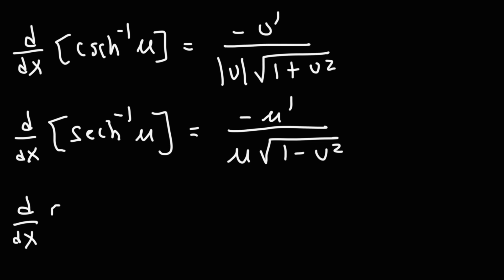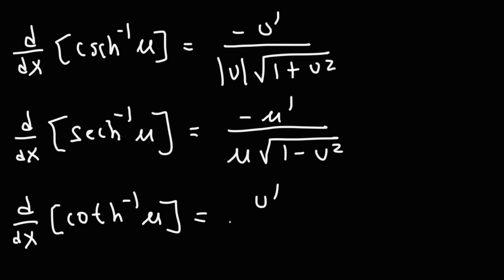The derivative of the inverse hyperbolic cotangent function of u is equal to u prime over 1 minus u squared, which is exactly the same as the inverse hyperbolic tangent function of u.